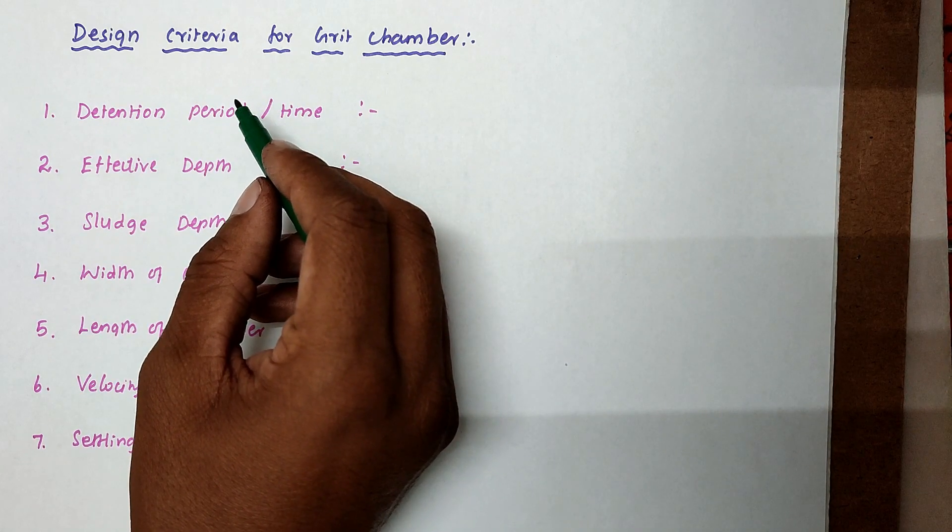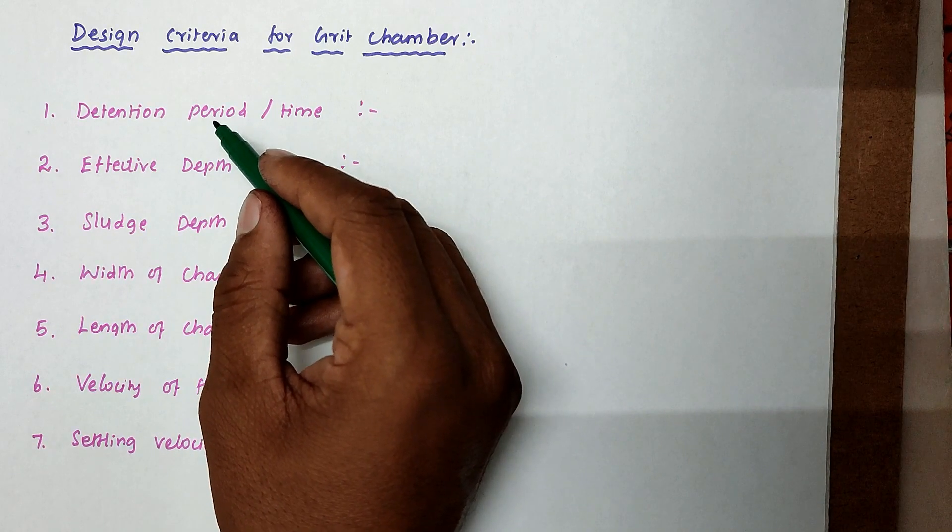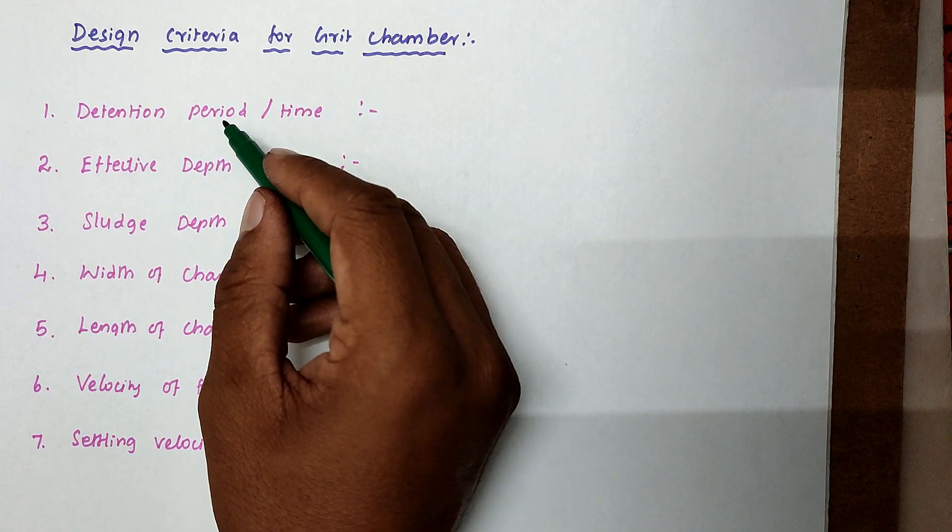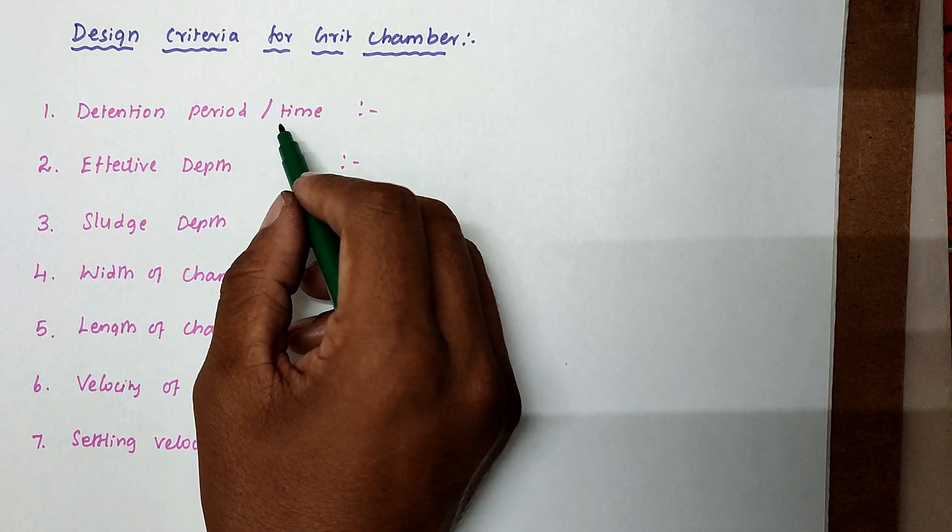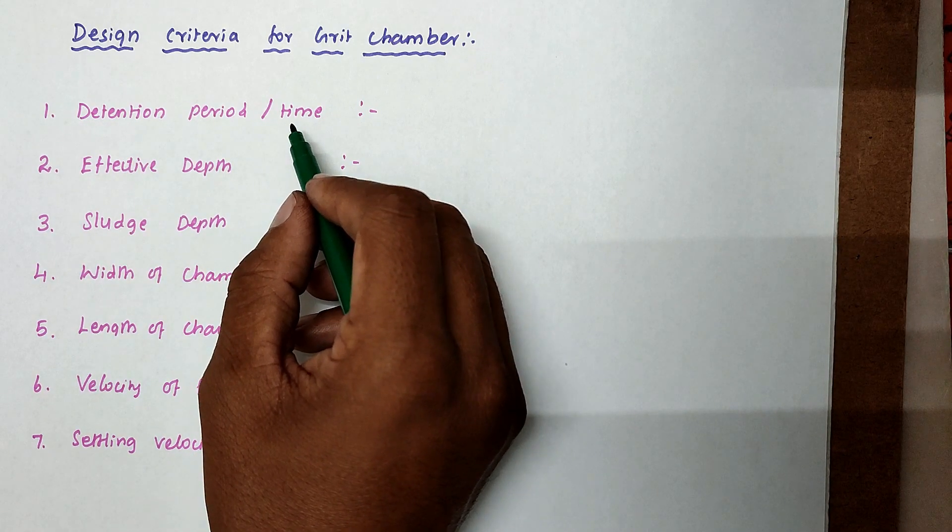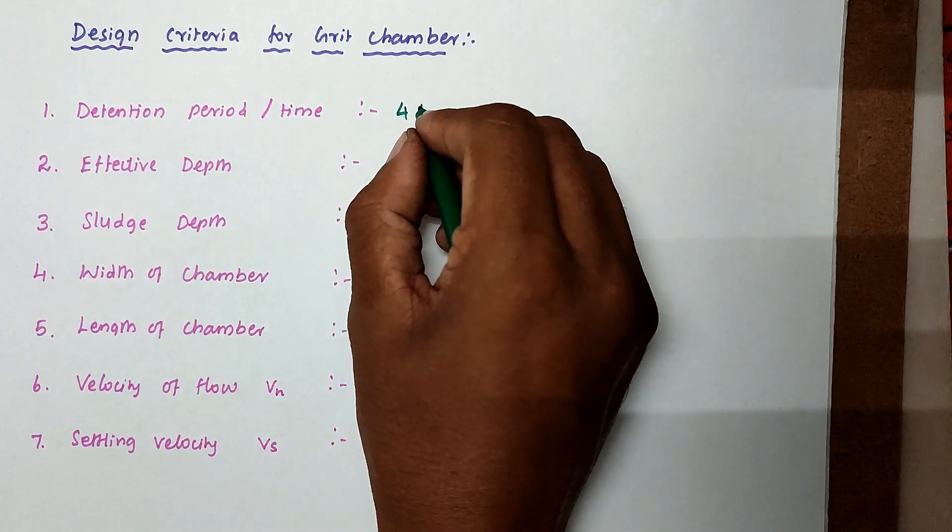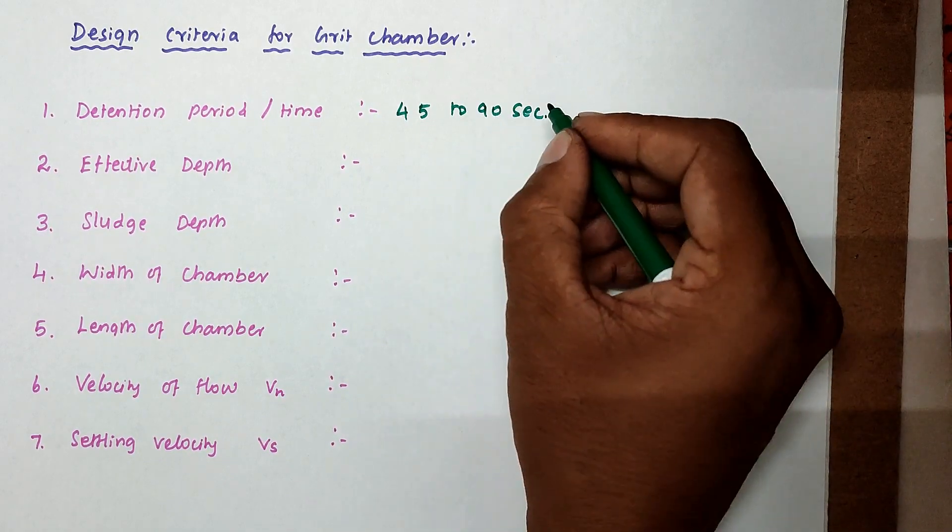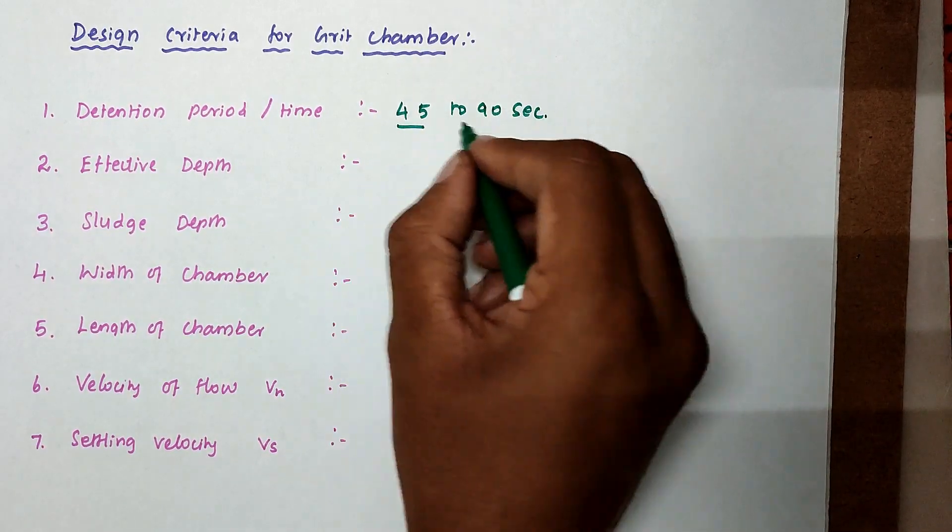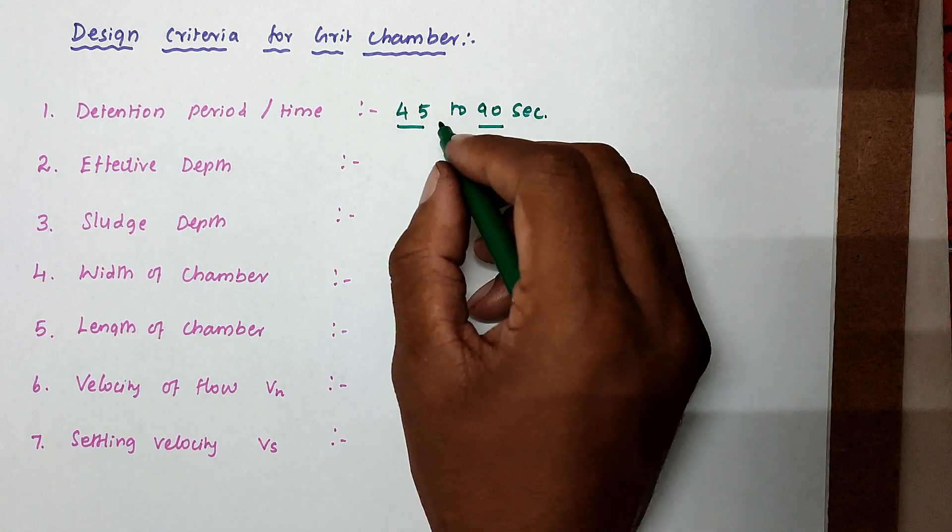For the design of grid chamber, we have to know some design criteria and assumptions, the standards we have to know. The first one is the detention period - the time of wastewater travel in the grid chamber. That is 45 to 90 seconds. So the minimum 45 seconds and maximum of 90 seconds should travel the water into the grid chamber.